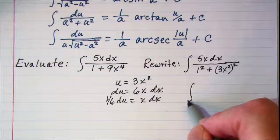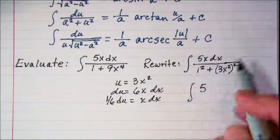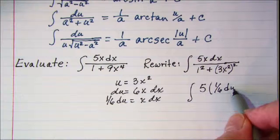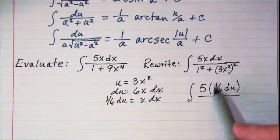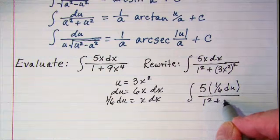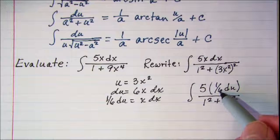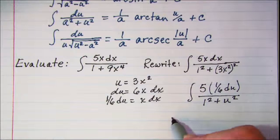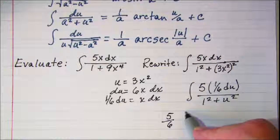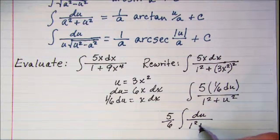So let's do our substitution here. We have the integral of 5, and then in place of xdx I'm going to write 1 sixth du, and then in the bottom I have 1 squared plus u squared. I can pull my 5 times 1 sixth, which is 5 sixth out in front of the integral. And so I'm integrating du over 1 squared plus u squared.